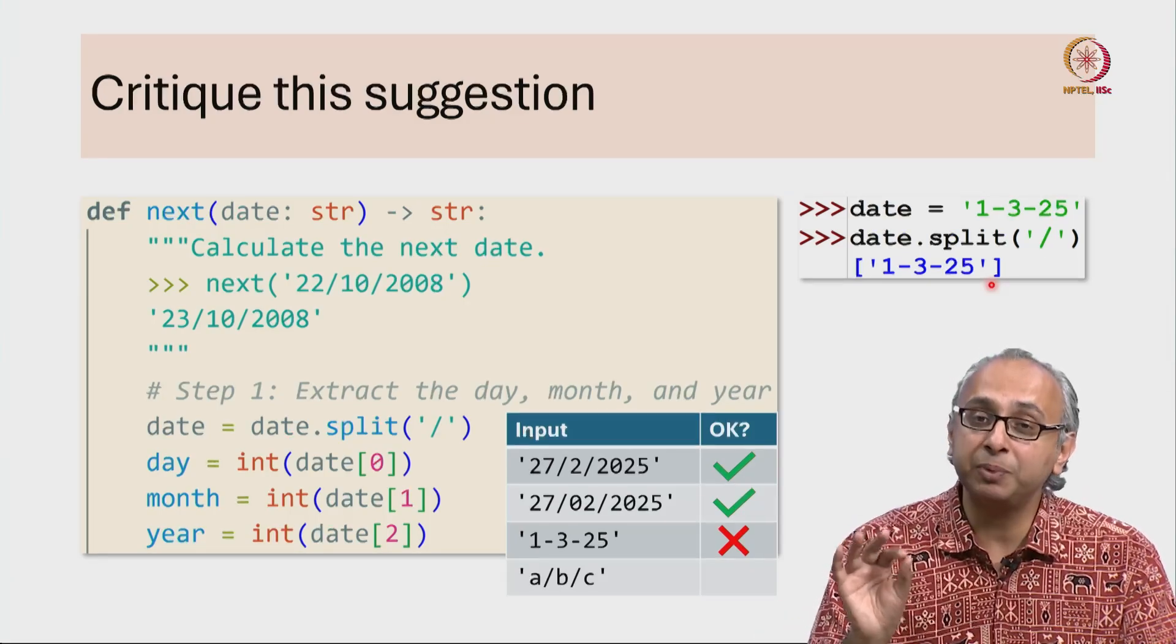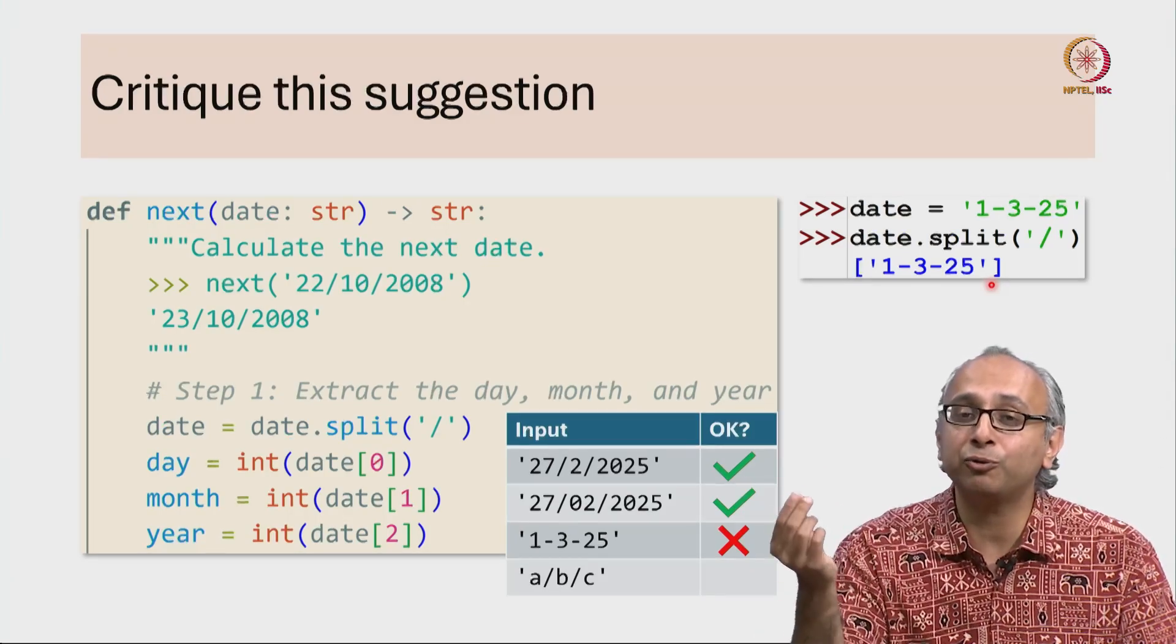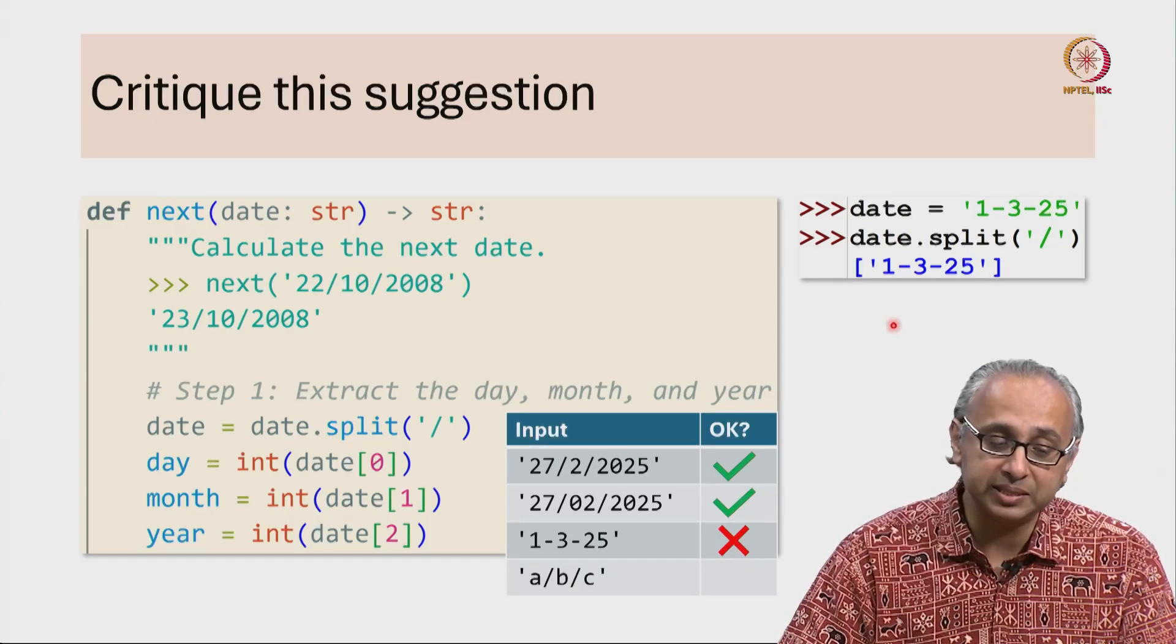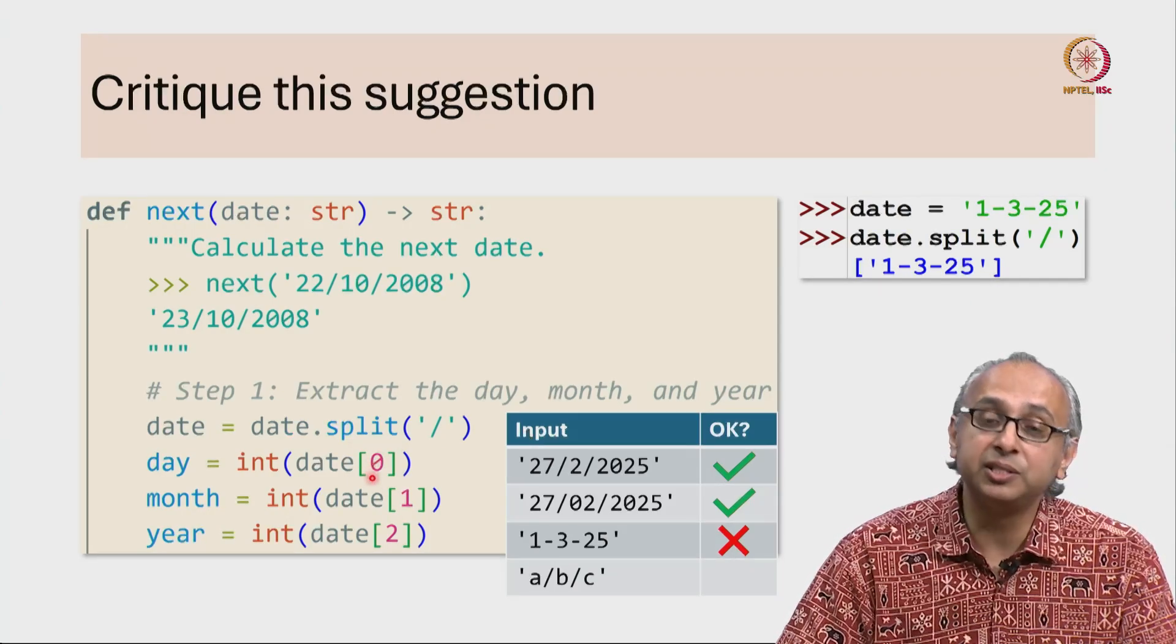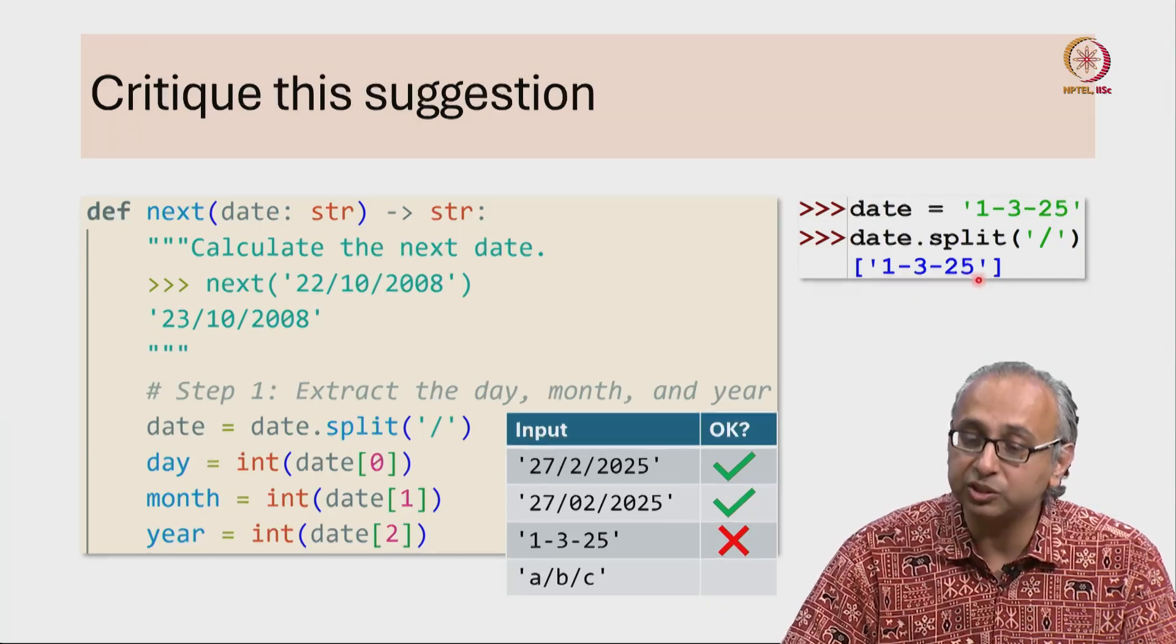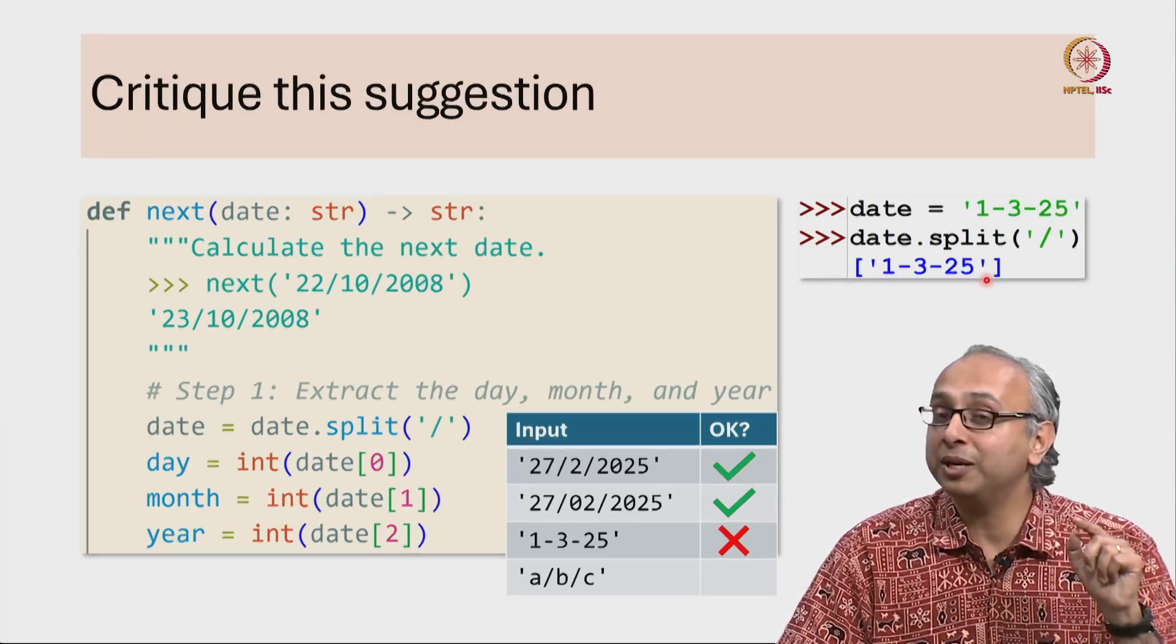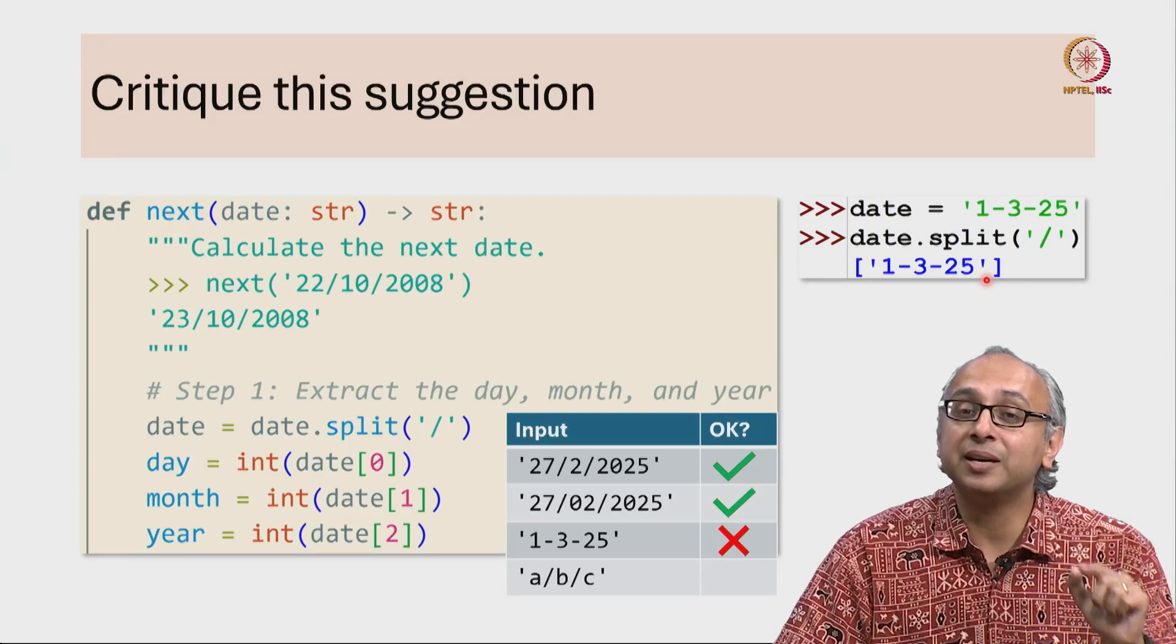This is what splitting means when you cannot find the item you're splitting by. Now, when we try to take this list and calculate its 0th item, well that is this string. When we try to convert this string into an integer, it doesn't work.